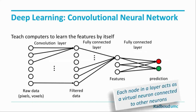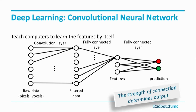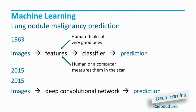Deep learning is a convolutional neural network that works totally differently. You have different layers in which each layer is calculated from the previous layers by putting various weights on the connections. Each node acts as a virtual neuron connected to other neurons, and the strength of the connection determines the output. During the teaching process these strengths are calculated. The training process is slow, but prediction once you put something new in is really fast. And the good thing is we don't have to come up with features — the computer finds these features itself. So instead of manually crafting features, the deep convolutional network does everything and comes up with a prediction.